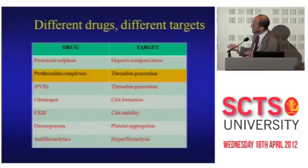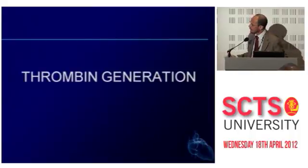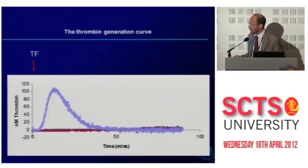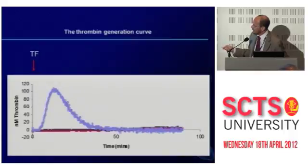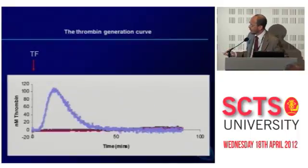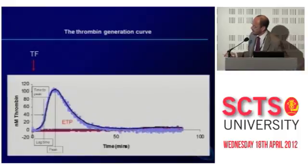Then we have a very complex scenario dealing with thrombin generation. Thrombin generation is a very important issue, and I would like to have this as a point-of-care test, but we are presently lacking one. This is a standard thrombin generation curve — you have fresh frozen plasma, you add tissue factor which is probably the most powerful thrombin generator in cardiac surgery. You look at what's going on in terms of thrombin generation, and you have the endogenous thrombin potential, which is a marker of the patient's ability to generate thrombin.